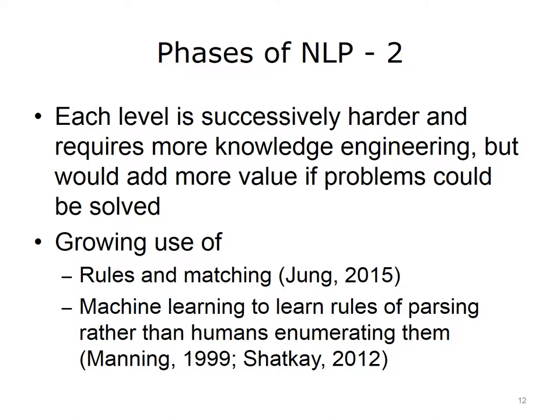One of the ways we address the inability to completely perform classic NLP is through the use of rules and matching, where we don't aim for complete understanding but instead try to recognize and normalize terms. Alternatively, instead of using detailed grammar rules, we may use machine learning techniques where we learn the rules of parsing rather than developing human enumerations of all possible grammar rules.